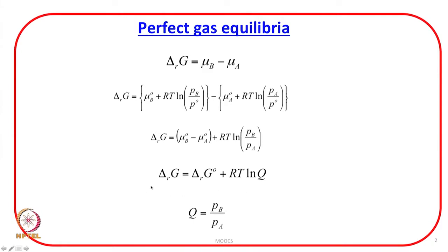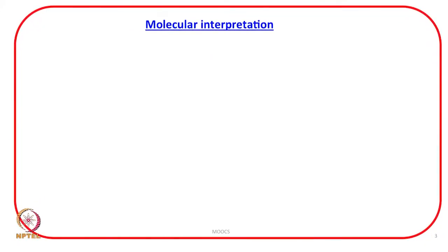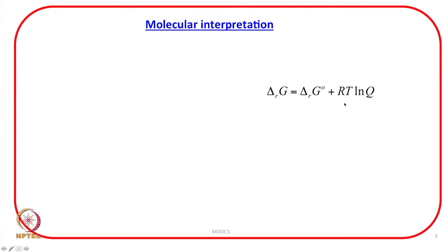This equation — delta Rg equals delta Rg naught plus RT log Q — is a very important relation because it connects the slope, the value of delta Rg, with Q. Q is the ratio of partial pressure of B and partial pressure of A. That means the value of Q depends on how much B and how much A is present in the reaction mixture, and this Q will decide delta Rg.